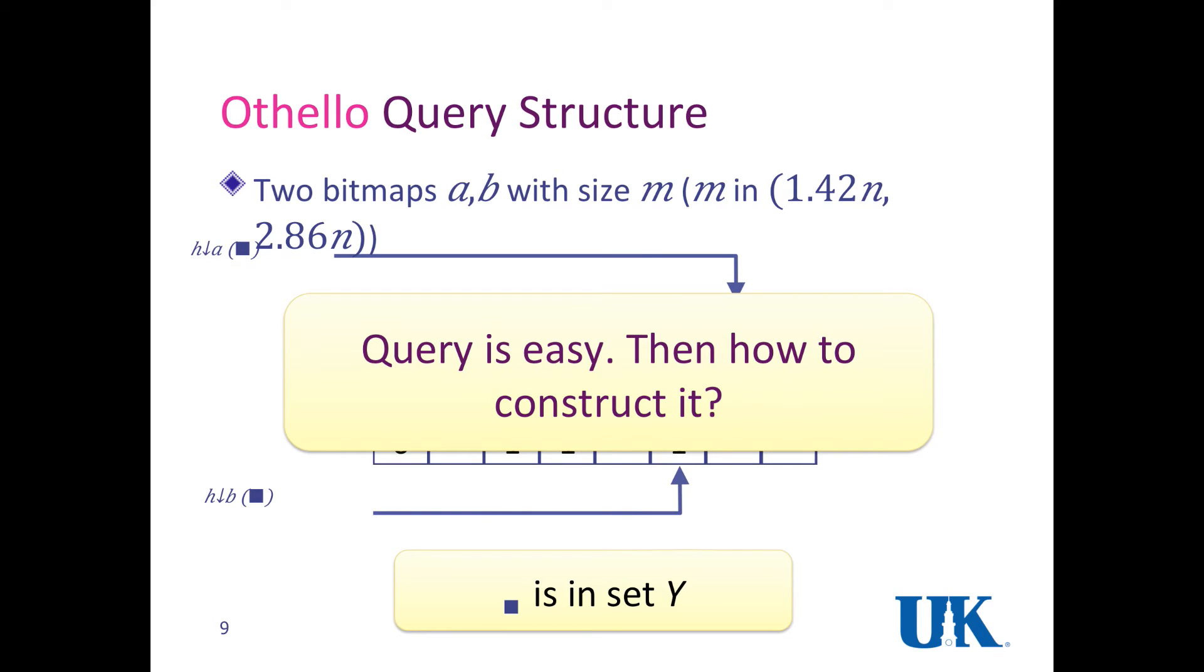Then how do we construct those two bitmaps? Is N the total number of names possible in the whole universe or just the number of names seen by this router? In the network. It's the total number of names in your network.